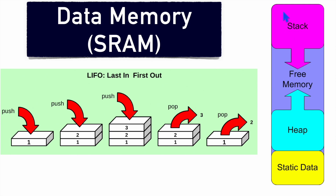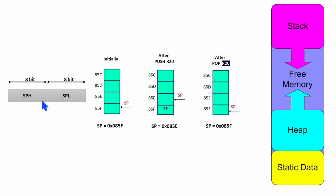While in empty state, your stack pointer will point to the end of the memory. The stack pointer is 16 bits in size, having an MSB and an LSB. When there is nothing present in the stack memory — meaning it is empty and has just been initialized — it will point to the end of SRAM, which is the end-of-SRAM address.